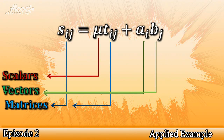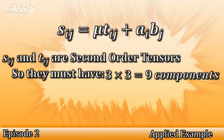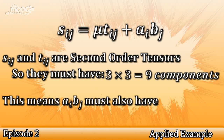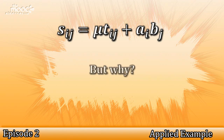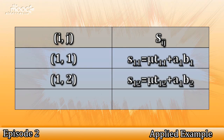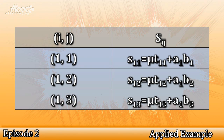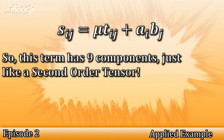What can we tell about this equation from our knowledge of tensors? Well, S_ij is a second-order tensor, so it must have 3 × 3 = 9 components. The same goes for T_ij, which is also a second-order tensor. This means a_i * b_j, which is two first-order tensors with different indices multiplied together, must also have 9 components. Consider the list of all components: if i = 1 and j = 1, then S11 = mu*t11 + a1*b1. If i = 1 and j = 2, then S12 = mu*t12 + a1*b2. If i = 1 and j = 3, then S13 = mu*t13 + a1*b3, and so on. The term a_i * b_j has 9 different combinations, in a similar way to our second-order tensor.